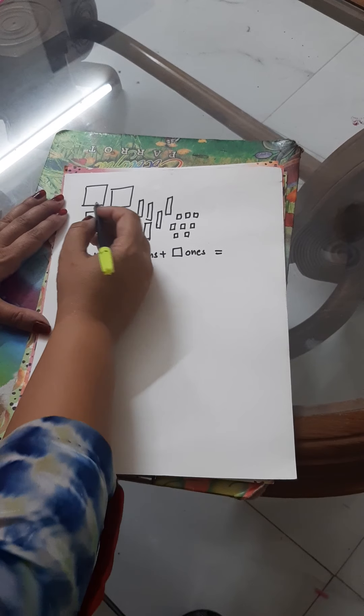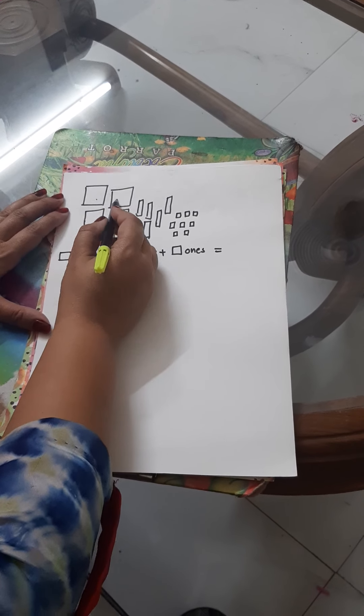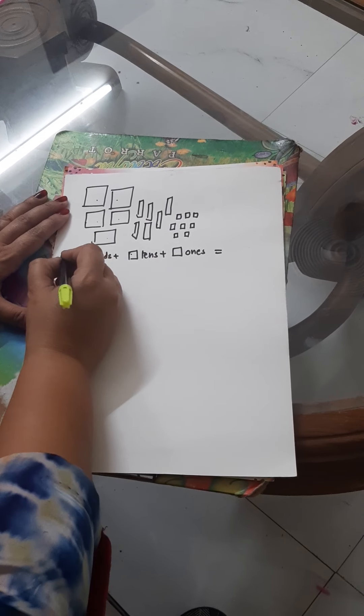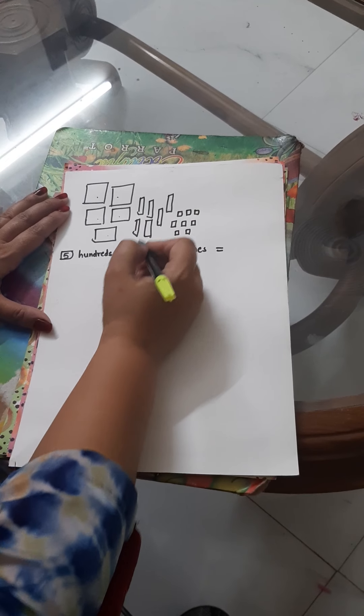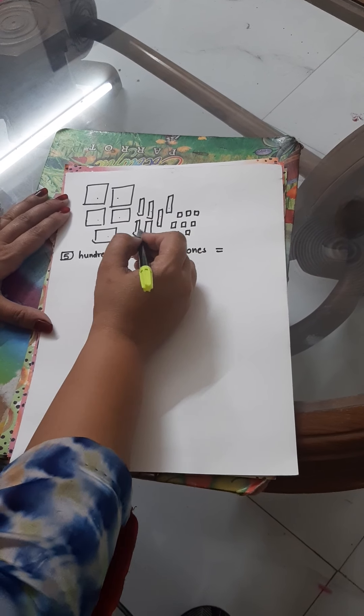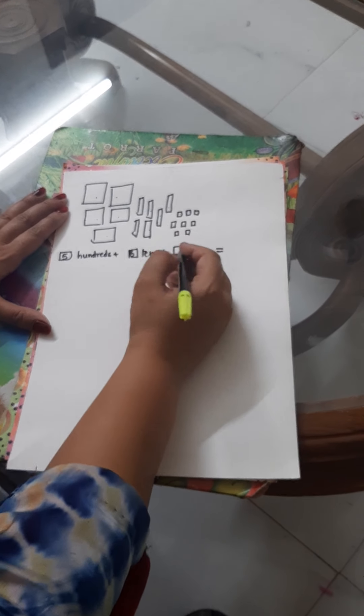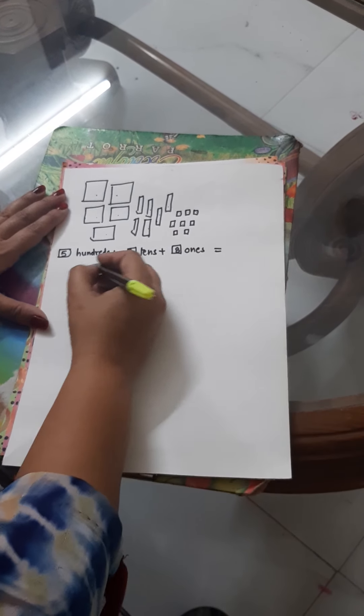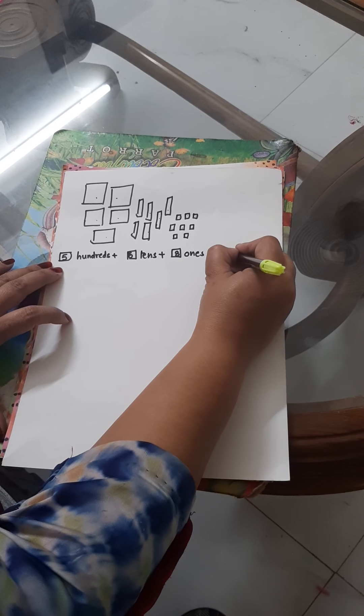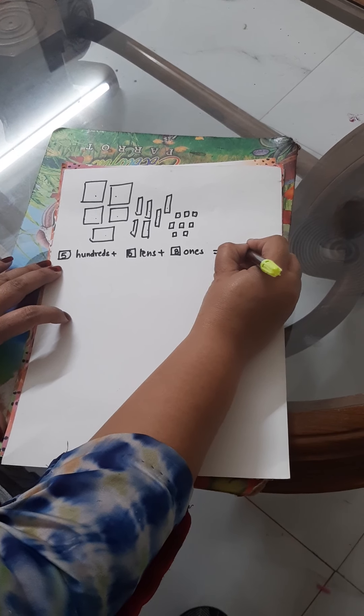It represents how many hundreds? 1, 2, 3, 4, 5. How many tens? 1, 2, 3, 4, 5, 6. And how many ones? 1, 2, 3, 4, 5, 6, 7, 8. The number that you will get is 568.